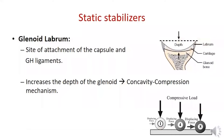The glenoid labrum provides a site for attachment of the capsule and glenohumeral ligaments. It also increases the depth of the glenoid, contributing to the concavity compression mechanism — meaning that in the absence of a concavity, only a minimal translating force is required to displace the sphere, but as the concavity becomes deeper, a greater displacing force is required for a given compressive load.